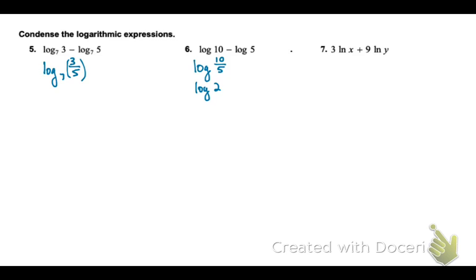Number 7. We'll start with the multipliers and rewrite those as powers. Now we'll deal with the addition. So if it's being pulled apart with addition, we can condense it with multiplication. So 1 log expression, x cubed, y to the 9th.